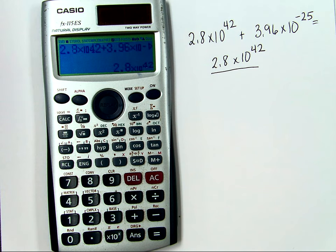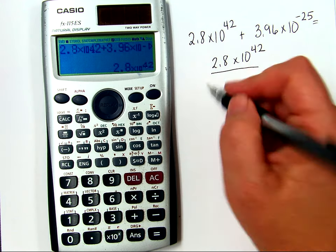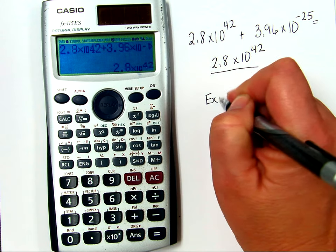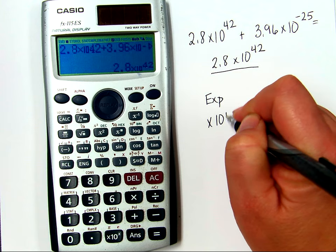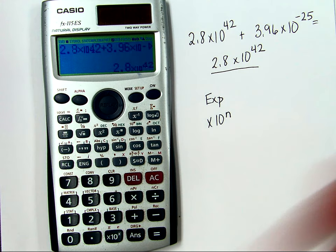All right, well, I can't show you all of them. There are many other places that you find these buttons. They can be seen as exponent, EXP, they can be times 10 to the N. Those are the buttons that you're looking for on your calculators.